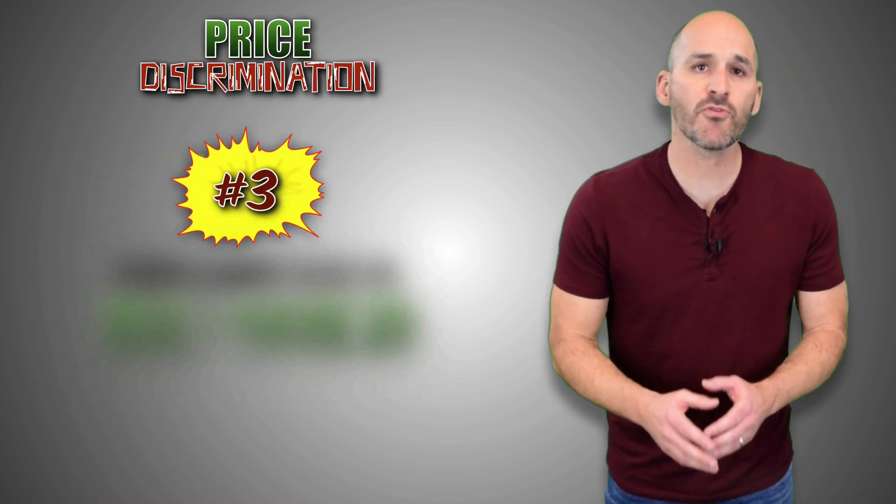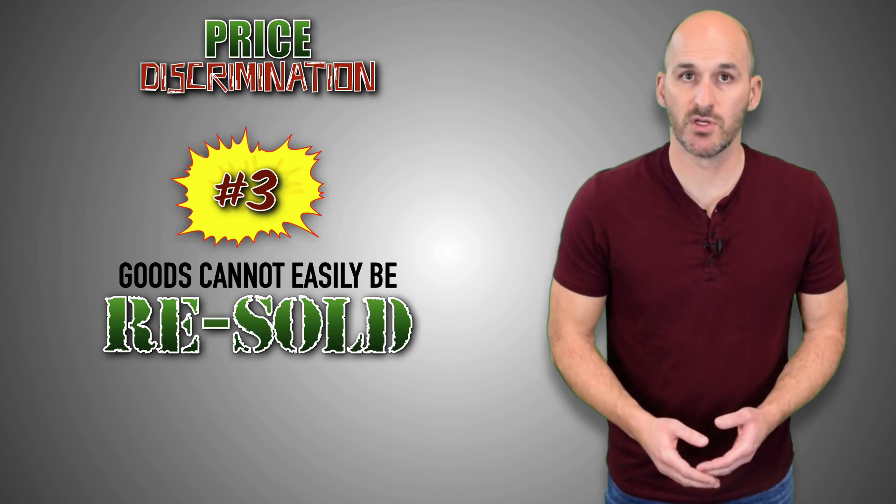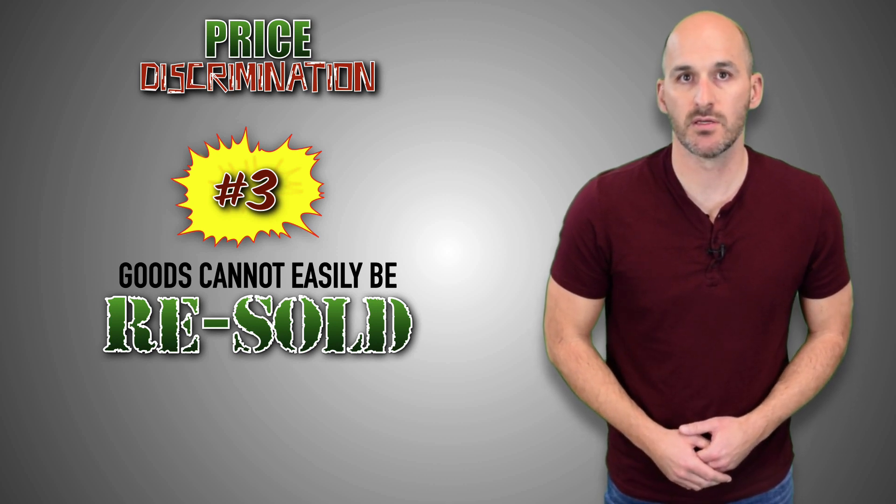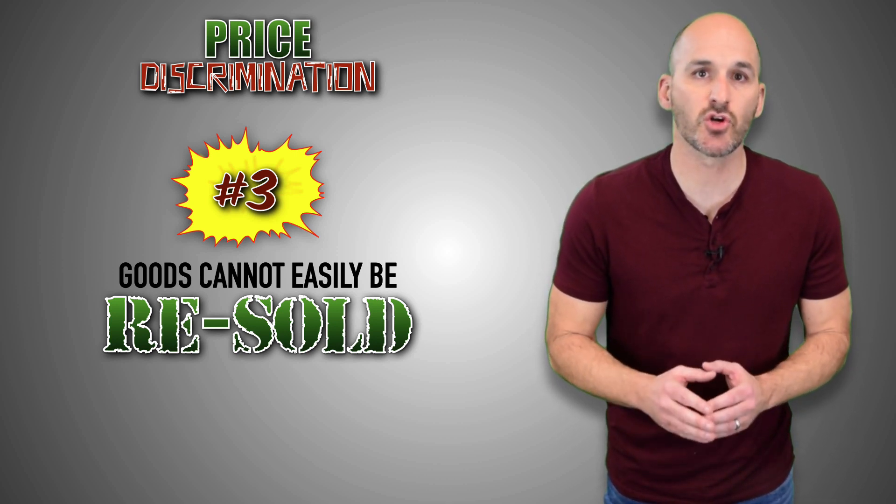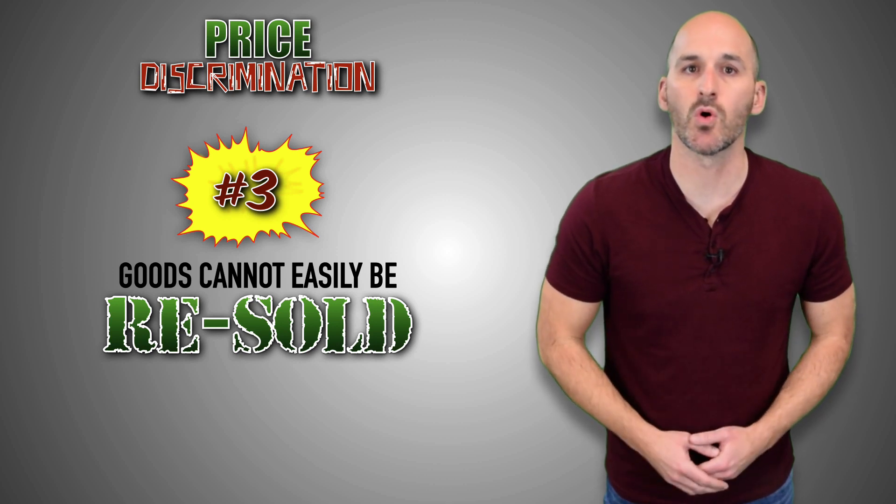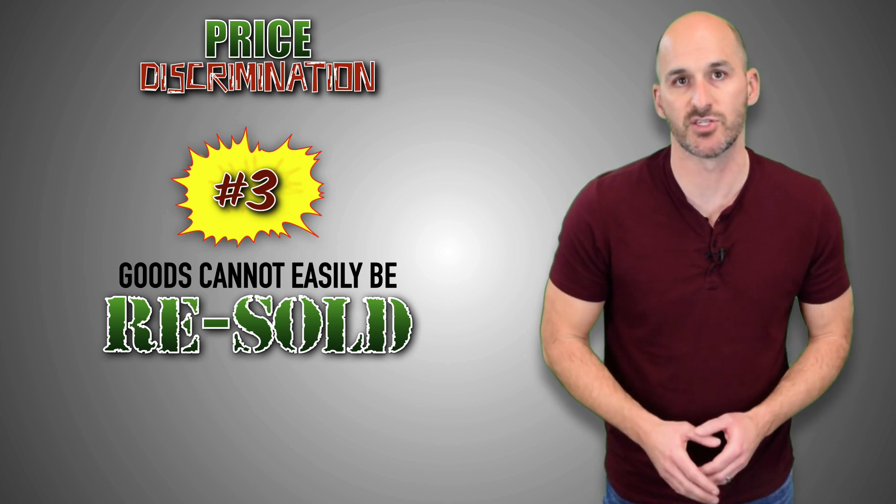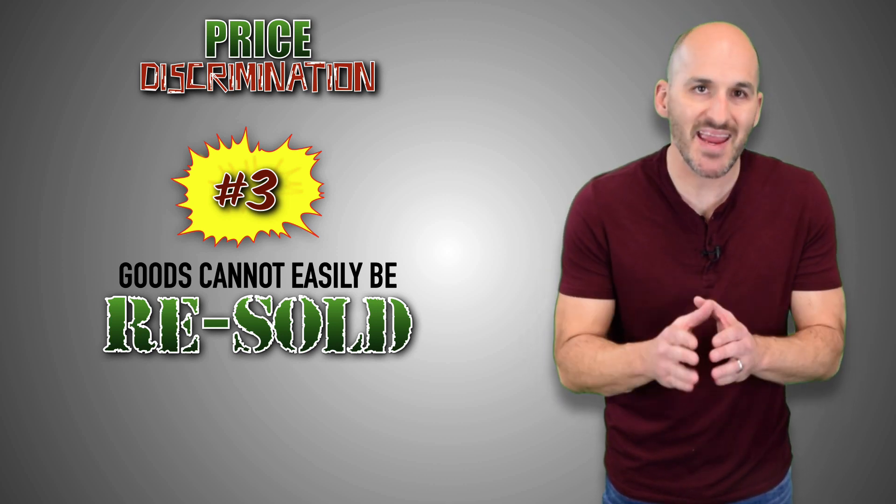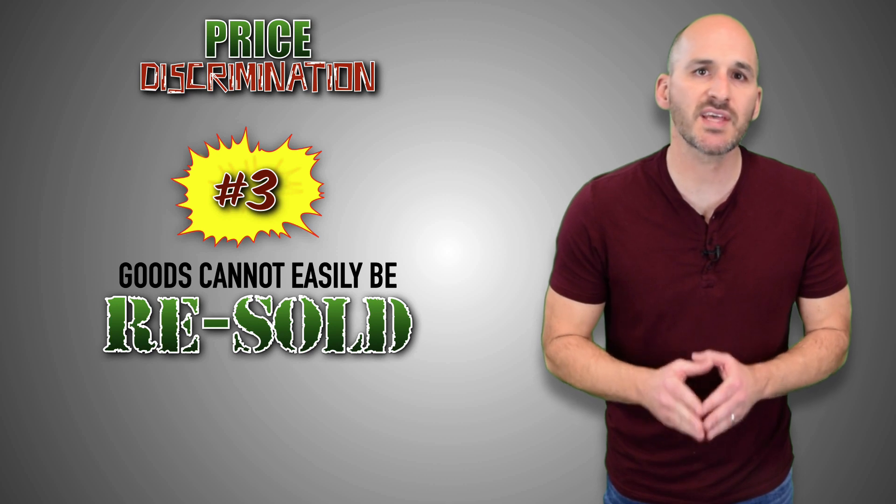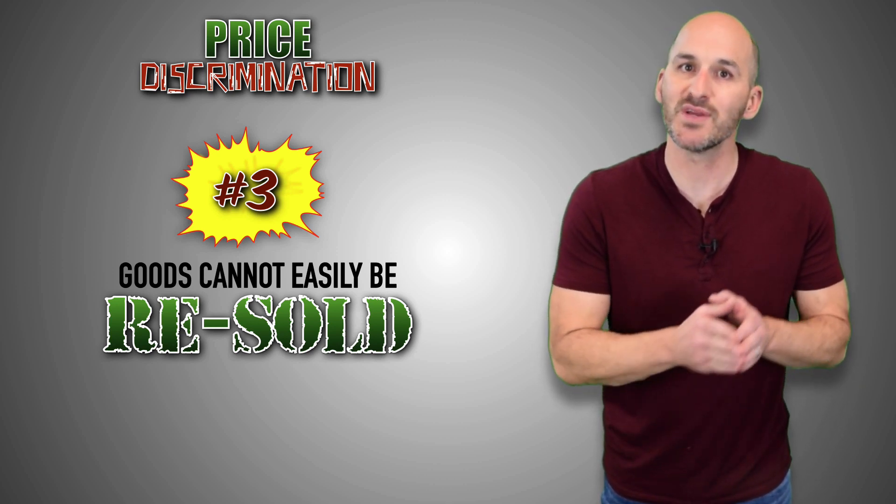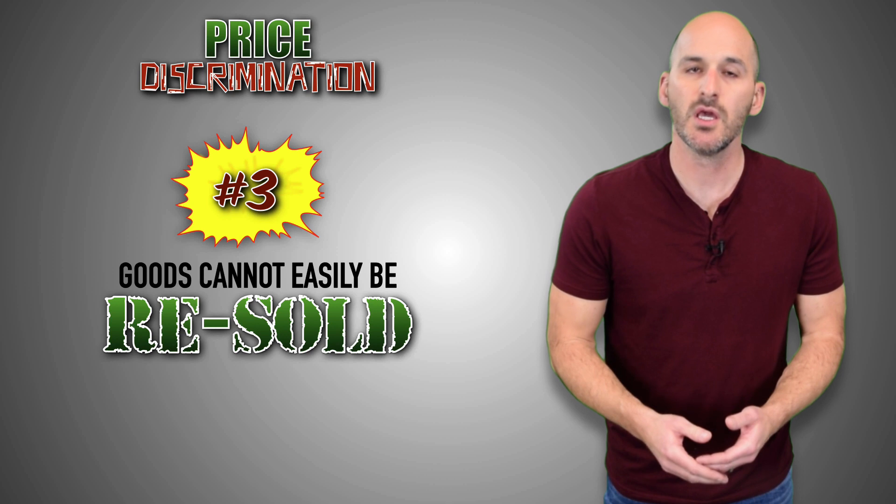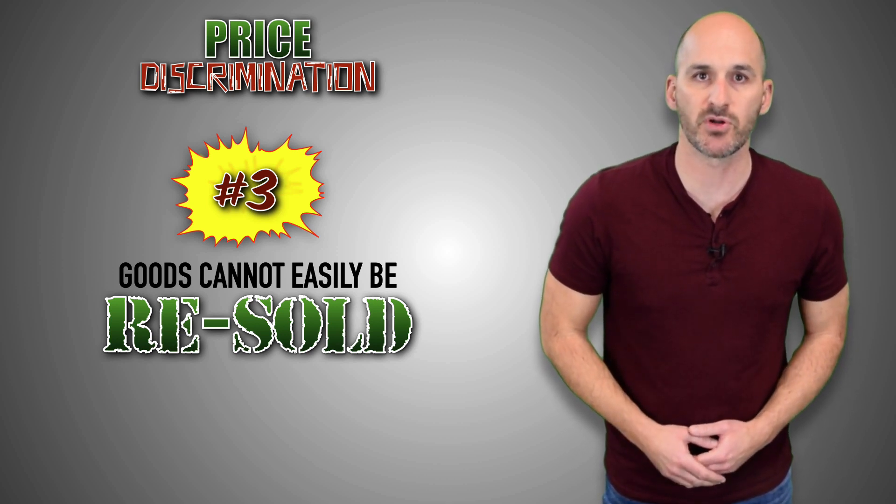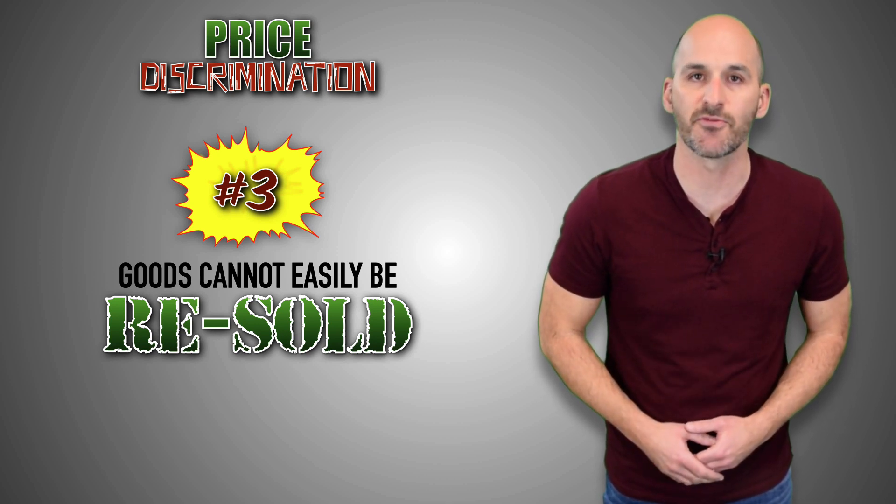Lastly, in order for price discrimination to be possible, consumers cannot easily resell the product being sold in the market. A monopoly's ability to price discriminate is determined entirely by the firm's role as the sole supplier and price maker in the industry. Preventing buyers from reselling goods maintains those roles. If consumers had the ability to buy a good and then resell it to another consumer at a different price, it would undercut the monopoly's control over market output and undermine the firm's ability to charge different prices to different consumers.